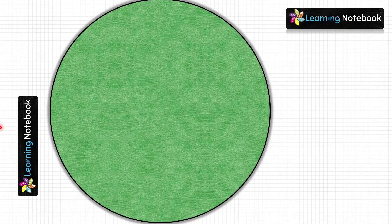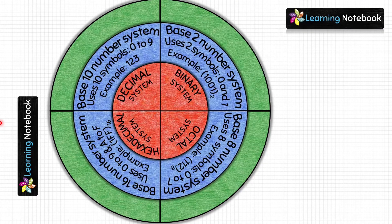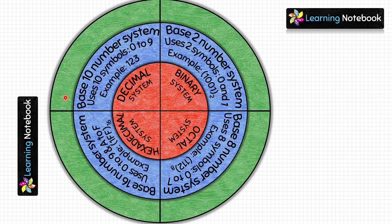Now we are going to take the green circle and fold it in the same way — vertically as well as horizontally. Then we will place both the blue and red circles on top of the green circle, making sure to match their centers. In the green circle we will write the expanded form of numbers in decimal, binary, octal, and hexadecimal number systems.